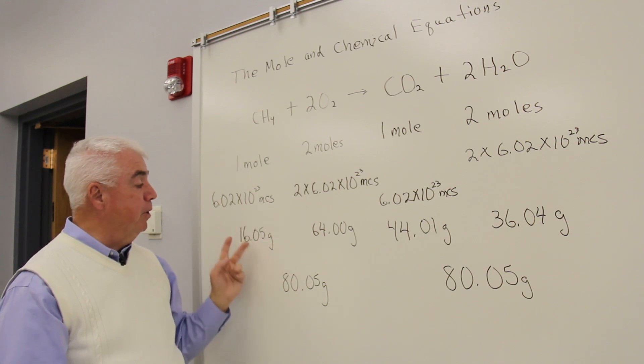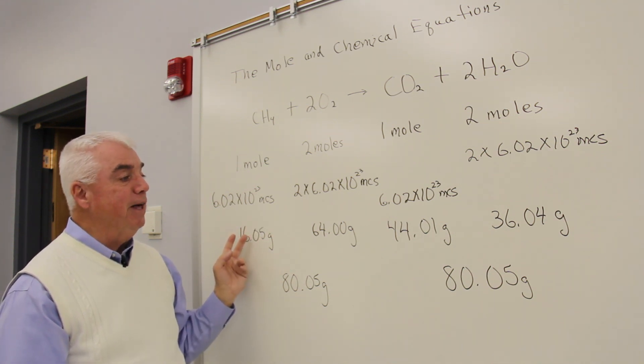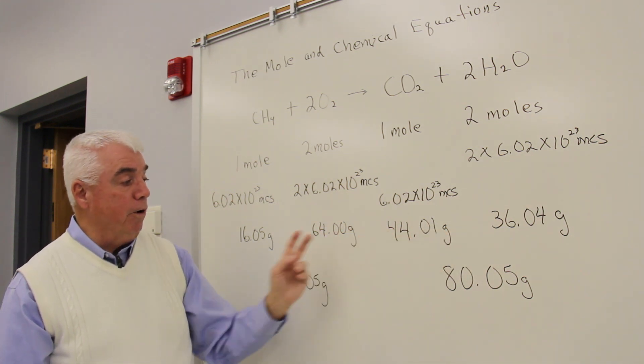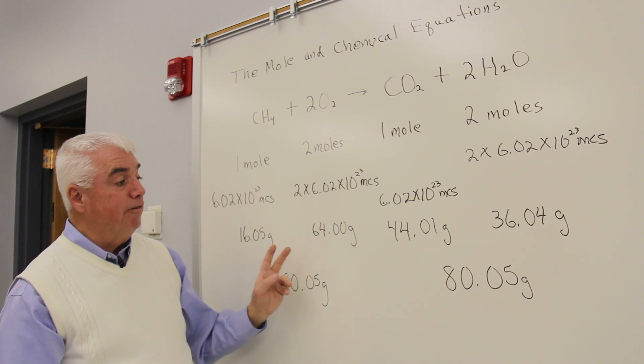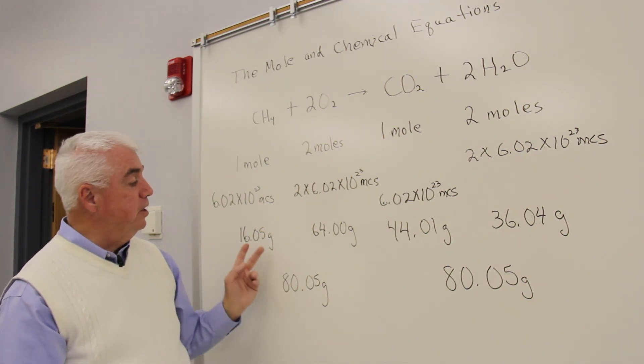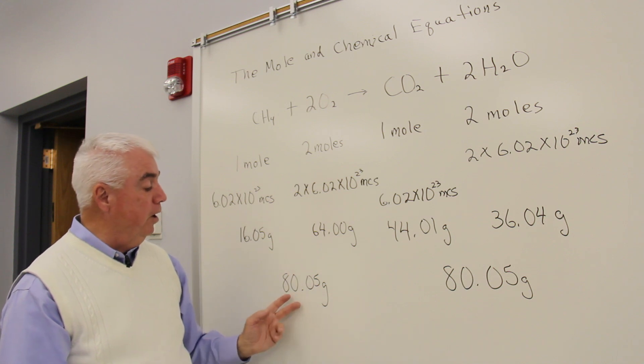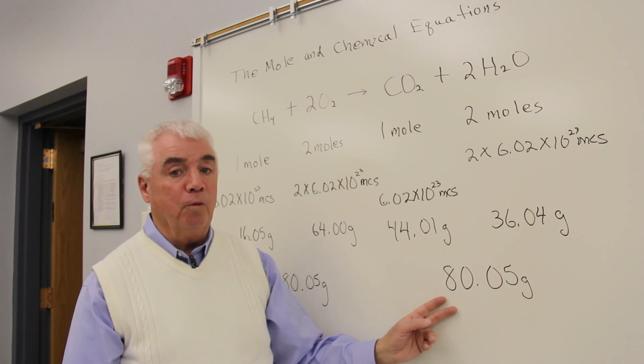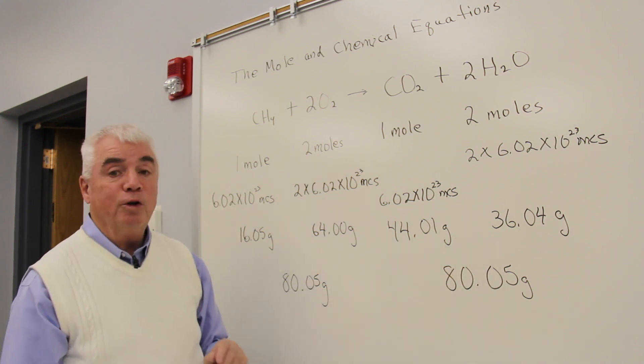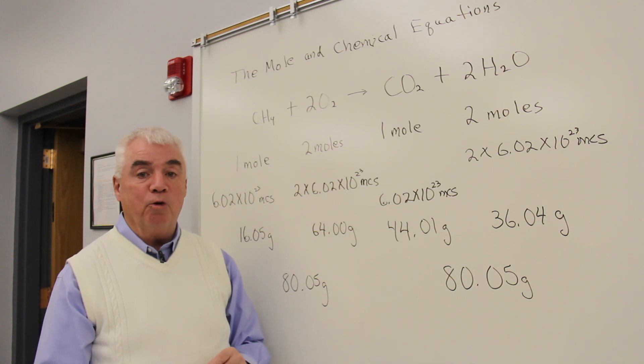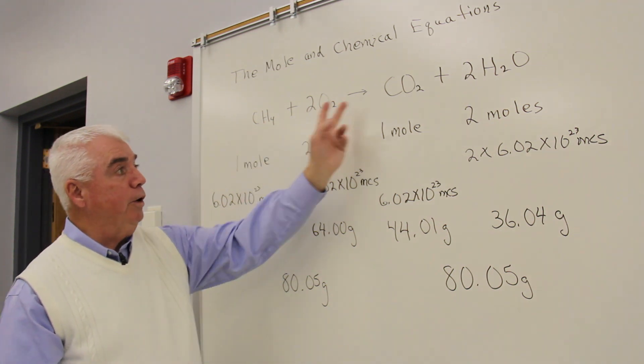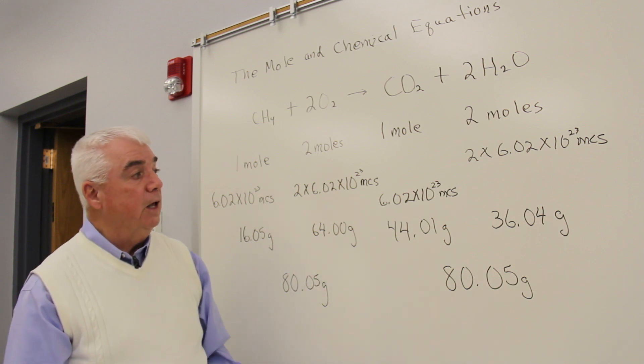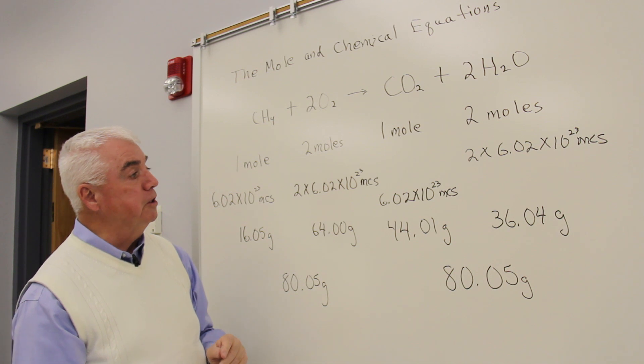So that means if we burn 16 grams of methane, we're going to get 36 grams of water, and so forth. An interesting fact is that if we total the number of grams of material on the left side, 80.05, we have of course that exact same number on the right-hand side. Under ordinary circumstances, we can't create or destroy matter. When an equation is balanced, it means that the grams will balance also. Let's work some problems now with these concepts.